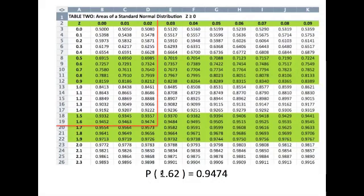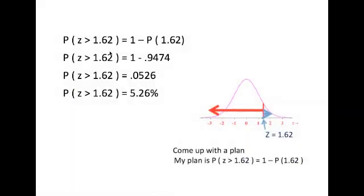Reading the table for z equals 1.62 — going to 1.6 and then 0.02 — we get 0.9474. Plugging into our plan: P(z > 1.62) = 1 minus 0.9474 = 0.0526, or 5.26%. There is a 5.26% probability that a randomly selected data point will have a z-score greater than 1.62.